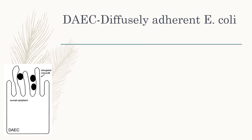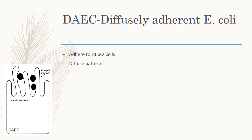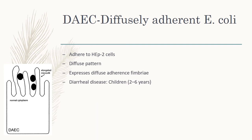The last type is DAEC, diffusely adherent E. coli. It is so named because of its ability to adhere to HEp-2 cells in a diffuse pattern. DAEC expresses diffuse adherence fimbriae, which contribute to its pathogenesis. DAEC causes diarrheal disease primarily in children aged two to six years.